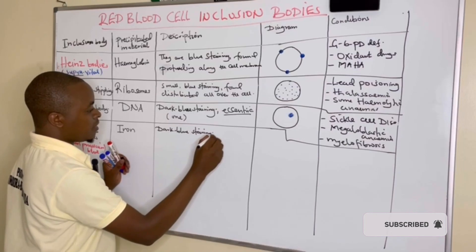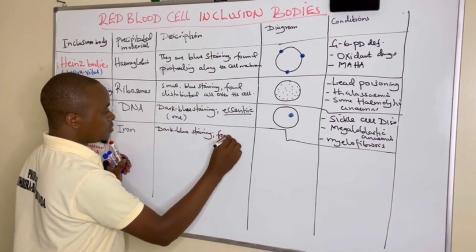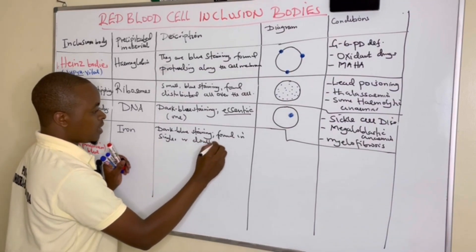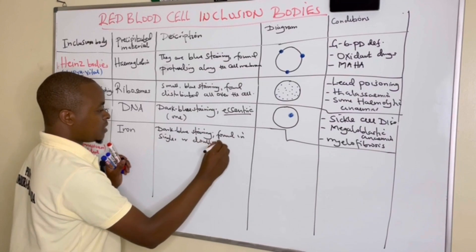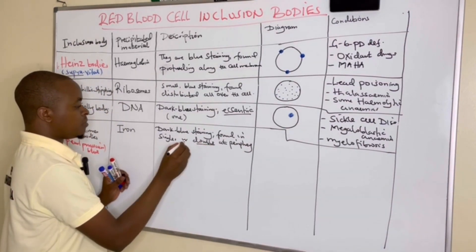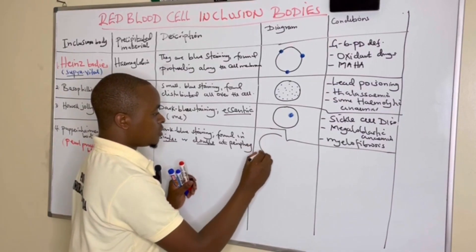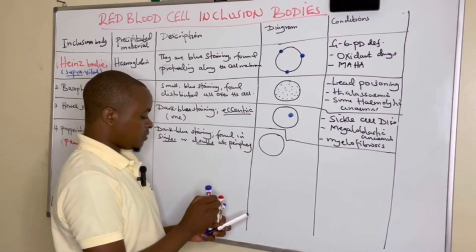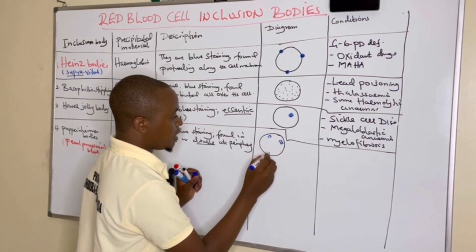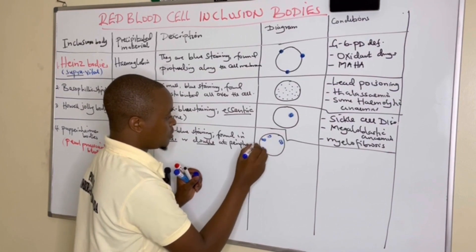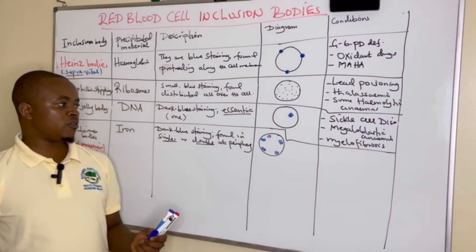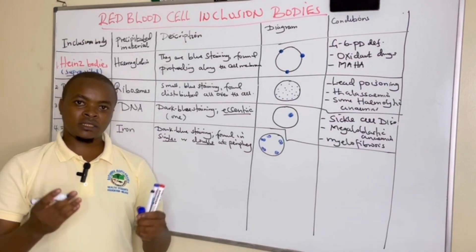Pappenheimer bodies are found in singles or doubles at the periphery of the cell — not in the center. They do not touch the membrane of the cell, but are found in doubles or singles and stay in a dark blue color.